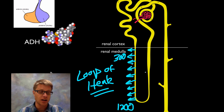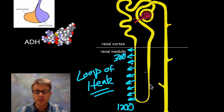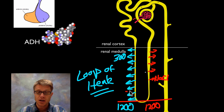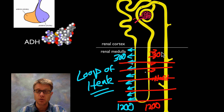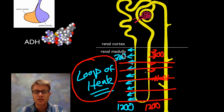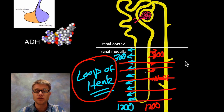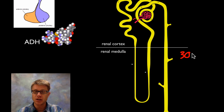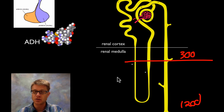On the ascending side of the loop of Henle, the tubule is not permeable to water but is permeable to salt. So on this side we lose salt, and in the thick portion of the loop we are actively pumping that salt out. This sets up a gradient: 1200 milliosmoles at the bottom, going back up to 300 milliosmoles at the top. The work of the loop of Henle is to set up this gradient — this is called a counter-current exchange, where fluid flows in opposite directions so the two sides interact with each other.